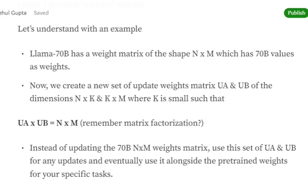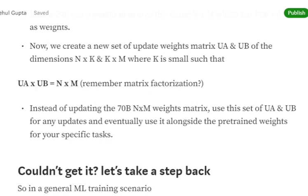Instead of updating the actual weights, we create two separate matrices UA and UB of dimensions N×K and K×M such that once we matrix multiply them, we get the same dimension as the actual weight matrix.